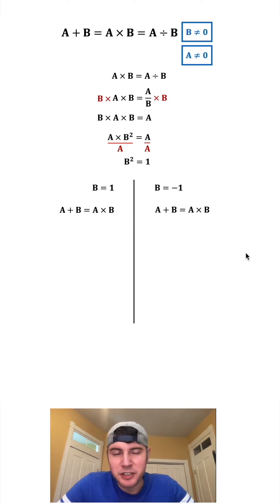For both scenarios let's look at A plus B equals A times B. For both of these B's let's plug in one. A times one is A so we end up with A plus one equals A. Let's subtract A from both sides. On the left hand side we have one and on the right hand side we have zero. So we end up with one equals zero. That is a contradiction. That means that B cannot equal one.